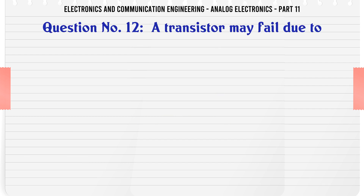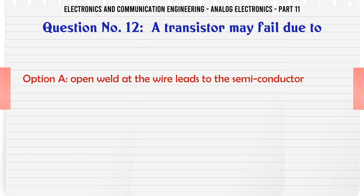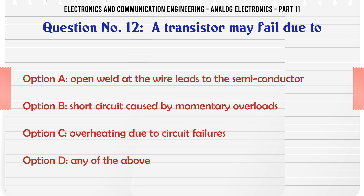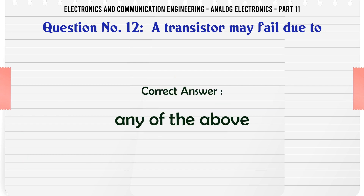A transistor may fail due to. A. Open weld at the wire leads to the semiconductor. B. Short circuit caused by momentary overloads. C. Overheating due to circuit failures. D. Any of the above. The correct answer is: Any of the above.